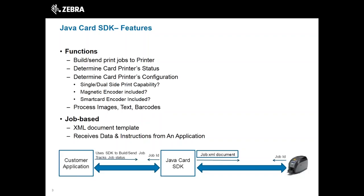The job gets a unique job ID from the printer, and the SDK can return it to the application. When the application requests the current job status, the SDK can poll the printer for that status — whether it's initializing, in progress, finished, or canceled. Since ZXP 1 and 3 printers are command-based and we're working with a job-based SDK, the job is split into individual commands sent to the printer. If a command fails, it can report an error code or status to the application. The XML document describes all the work to be done for a single print.